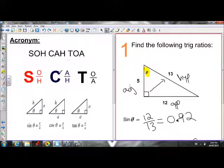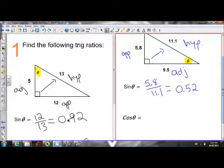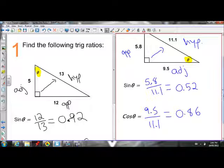Cosine, CAH, is adjacent over hypotenuse. So adjacent over hypotenuse is 9.5 over 11.1. On my calculator, that gives me 0.86.